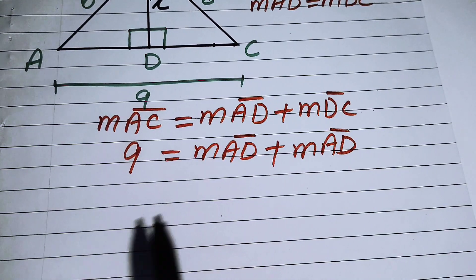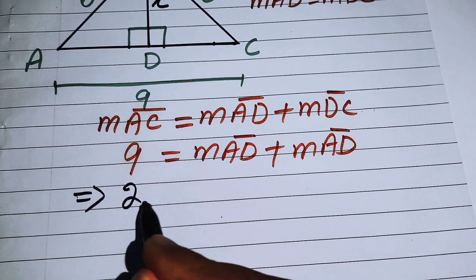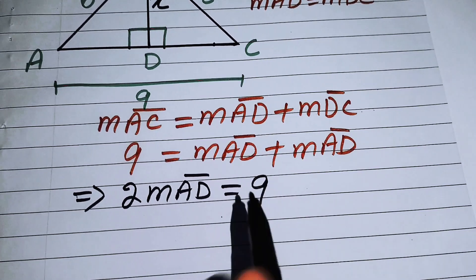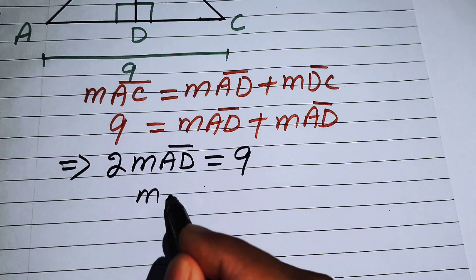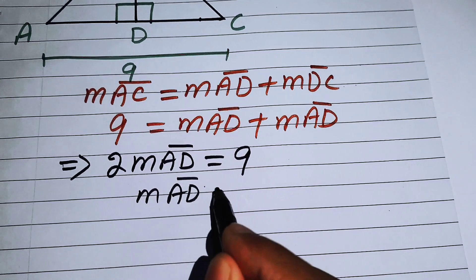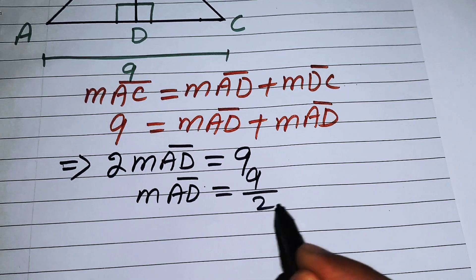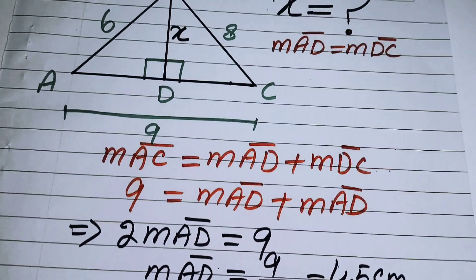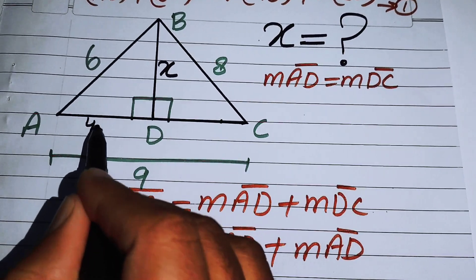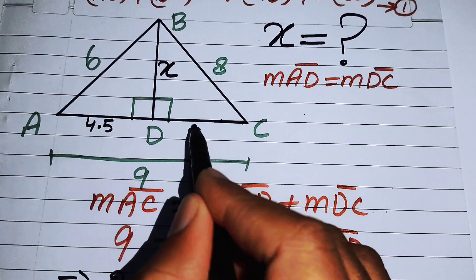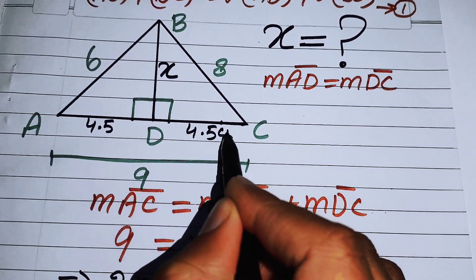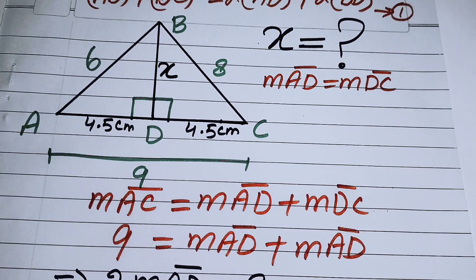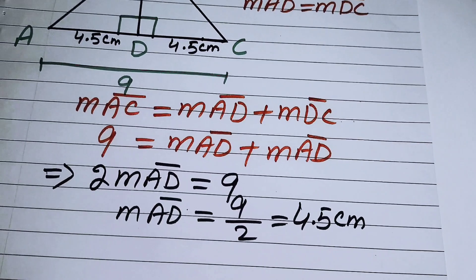Adding the two equal parts: 2 times the measure of AD equals 9, so the length of AD equals 9 divided by 2, which is 4.5 centimeters. This means AD equals 4.5 centimeters and DC also equals 4.5 centimeters. Now in the next step we apply the Apollonius theorem.